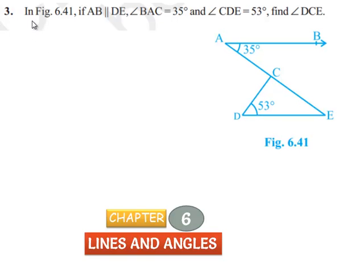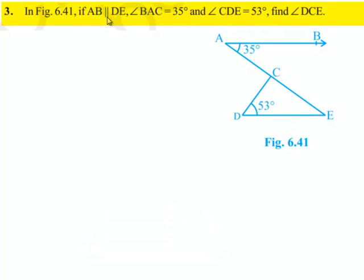Moving on to the third question, in figure 6.41, if AB is parallel to DE, angle BAC is equal to 35 degrees and angle CDE equals 53 degrees, then find angle DCE.